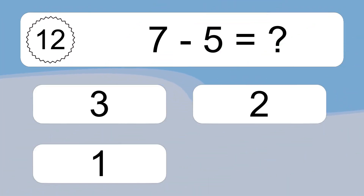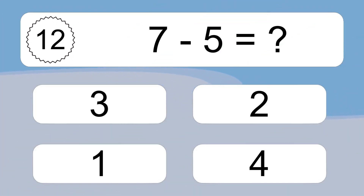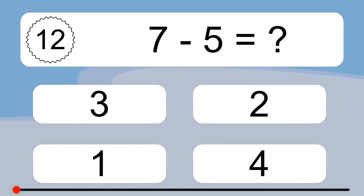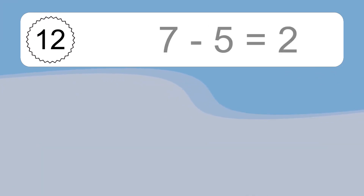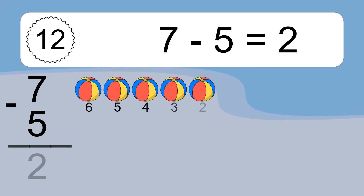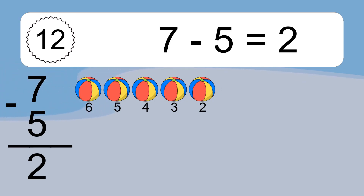7 minus 5 equals what? 7 minus 5 equals 2. Let's count it: 6, 5, 4, 3, 2.